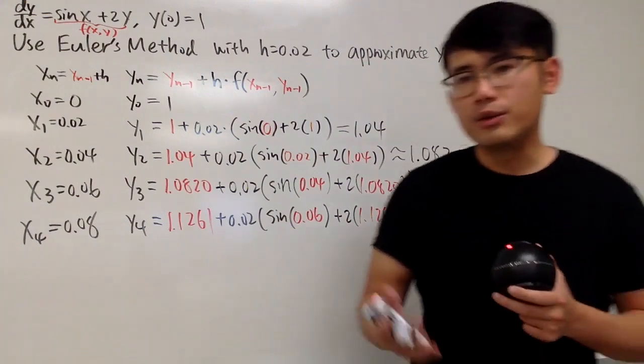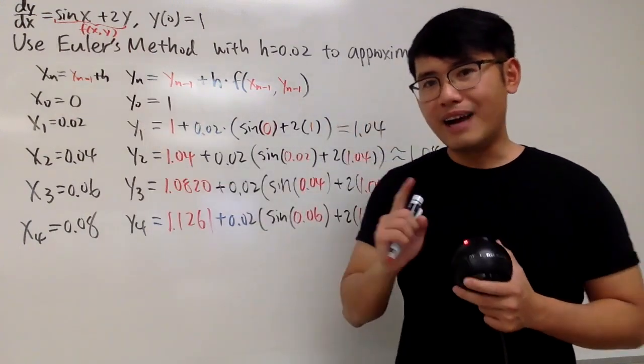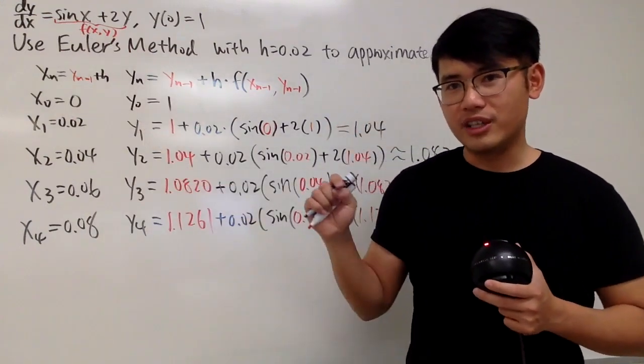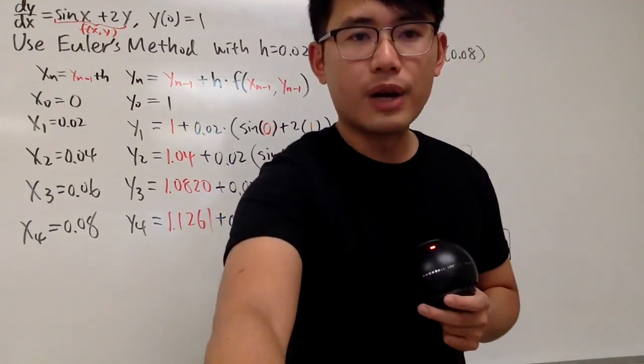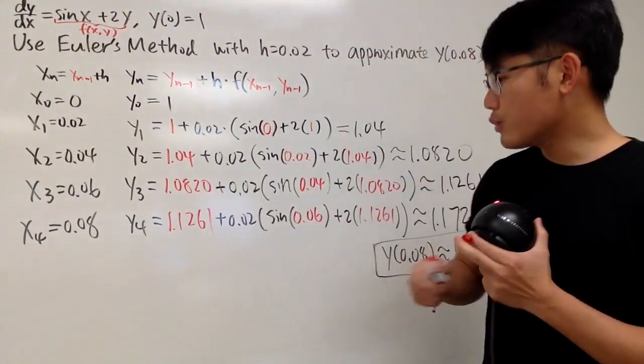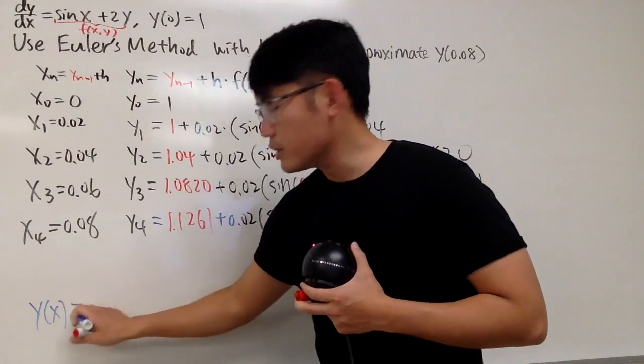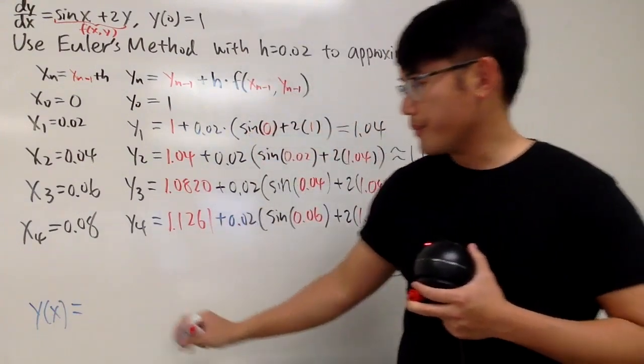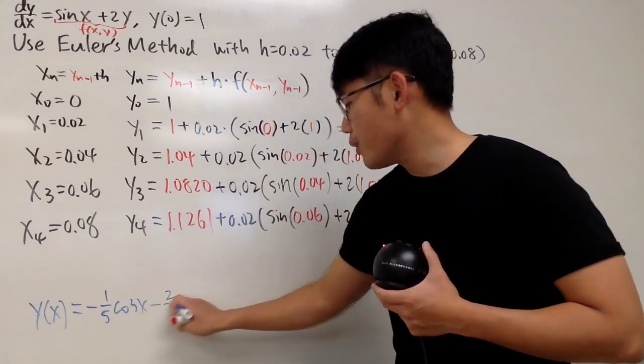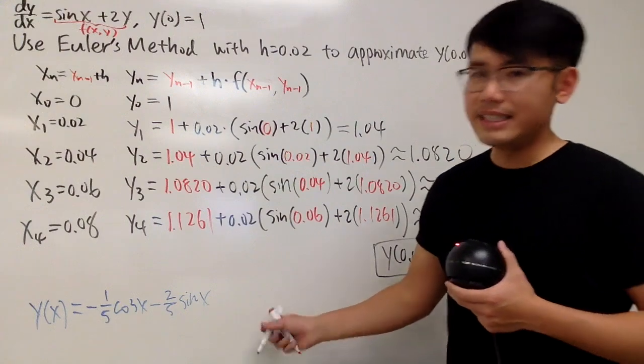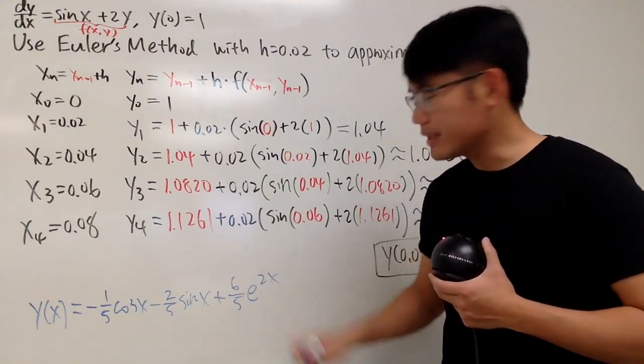And of course, I know a lot of you guys would like to know how to solve this differential equation from scratch. I have the video already for you guys, so be sure you check the link in the description if you haven't seen that already. And of course, let's compare the values. So I'll write it down for you guys. The truth is y of x, y as a function of x, is equal to negative 1 over 5 cosine x minus 2 over 5 sine x, and then lastly, we have plus 6 over 5 e to the 2x.